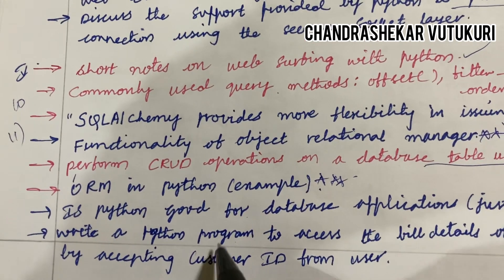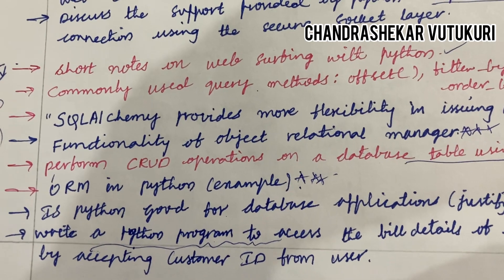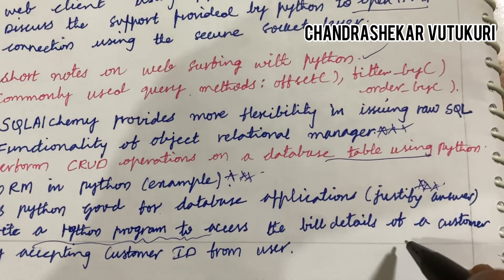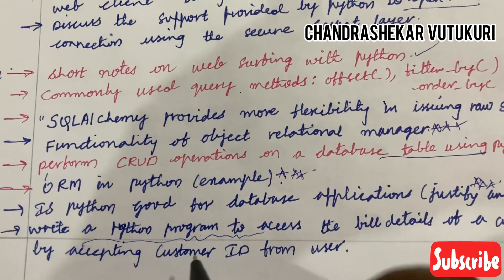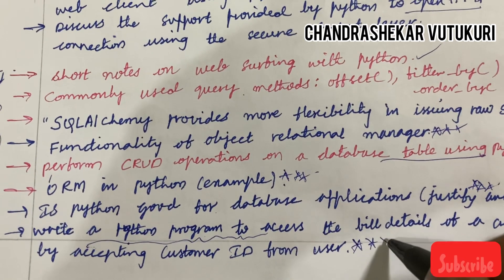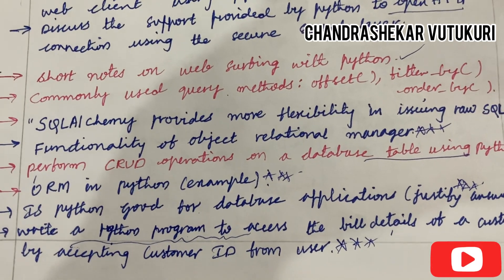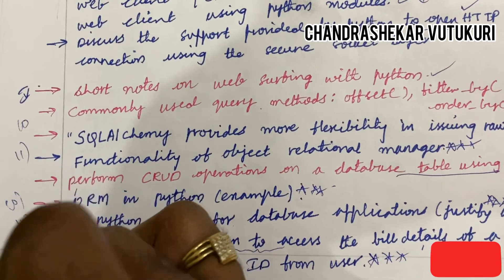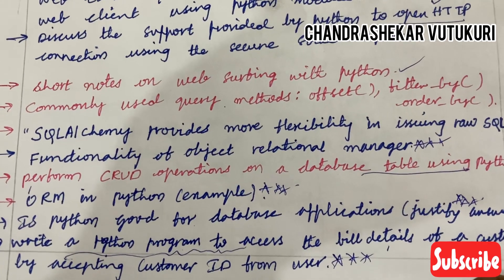Write a Python program — Python programs are sure from the 11th question, students. The Python program to access the bill details of a customer by accepting customer ID from the user — such application-oriented programs you are supposed to practice many in number. This is all about the 10th and 11th question in the question paper.